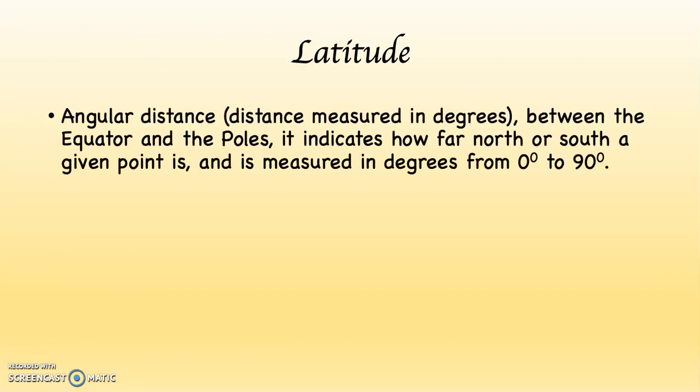We're going to begin with latitude. Latitude is angular distance — distance measured in degrees between the equator and the poles. It indicates how far north or south a given point is, and it's measured in degrees from zero to 90 degrees. It's a system of counting, but a limited one. You can count from zero to 90, which means there is no 91 or 191 in latitude. Zero to 90, and that's it.